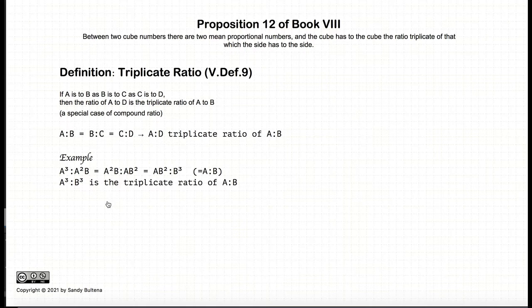And similarly to the duplicate ratio, if we use an example, I have that a cubed to a squared b is equal to a squared b to a b squared is equal to a b squared to b cubed. You can see that it's correct. So all of these ratios is equal to a to b. And thus, a cubed to b cubed is the triplicate ratio of a to b.